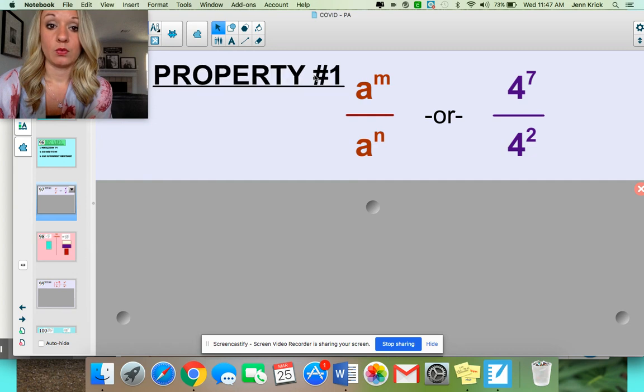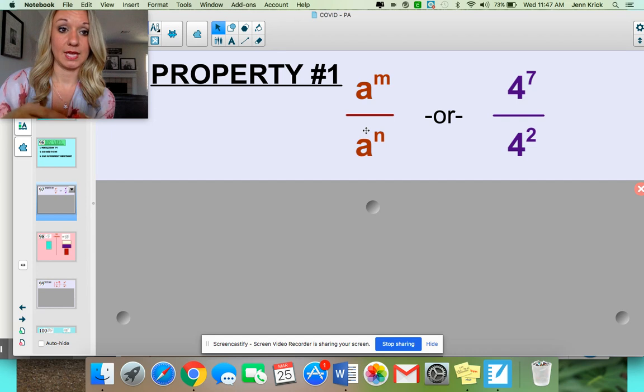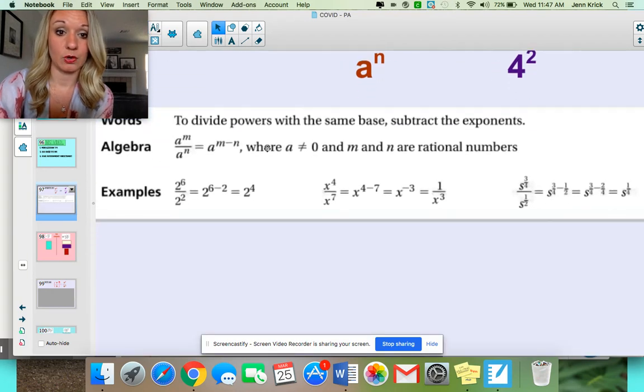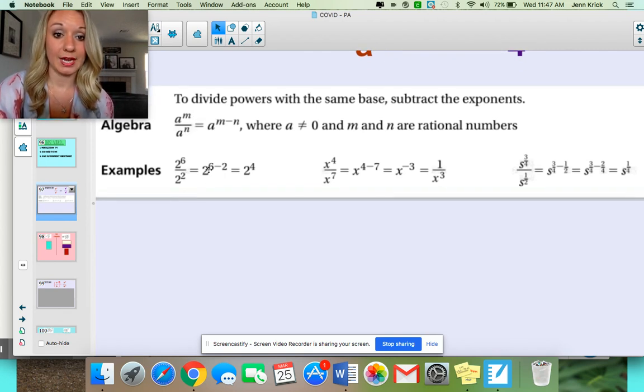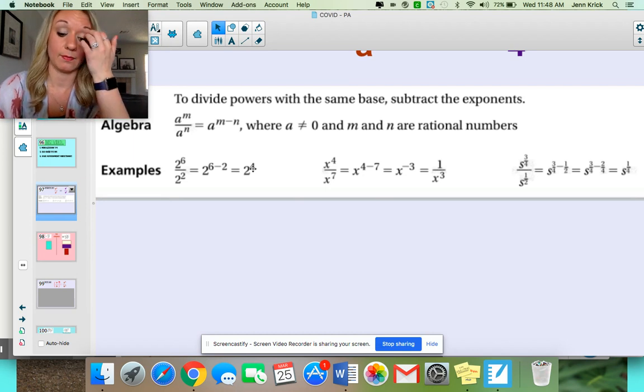Property number one, we are looking at division of terms that have the same base, but different exponents. So notice same base a and a, same base four and four. When you've got the division of the same bases, we subtract the exponents and hopefully this looks familiar to you. So if you have a to the m over a to the n, we can just subtract this and that's going to help us simplify. Looking at it with actual numbers, if you've got 2 to the 6 over 2 squared, 6 minus 2 gives you 4. So 2 to the fourth is your expression simplified.